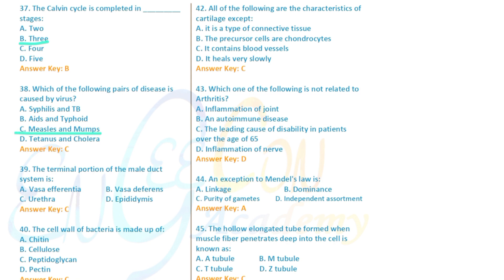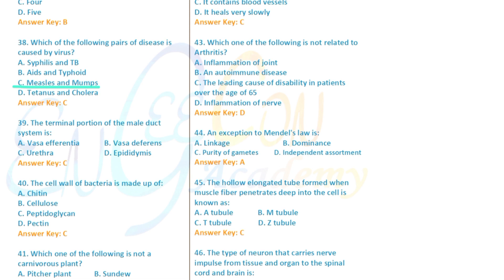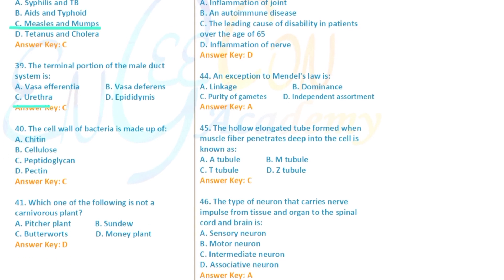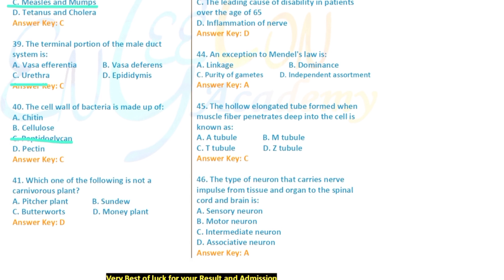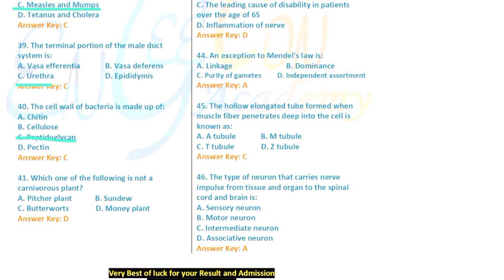Question: Which pair of diseases is caused by a virus? The answer is measles and mumps. Question: The terminal portion of the male duct system. Question 40: The cell wall of bacteria is made of peptidoglycan (murein).